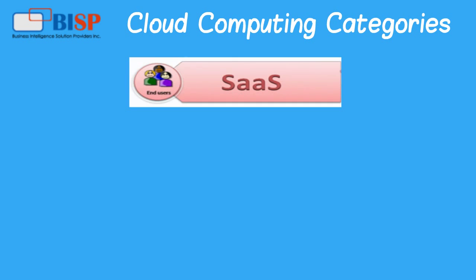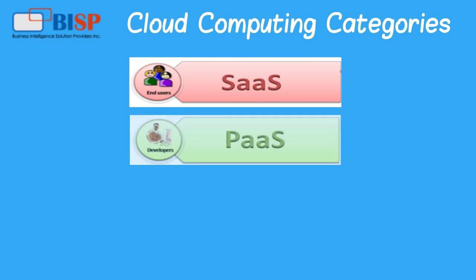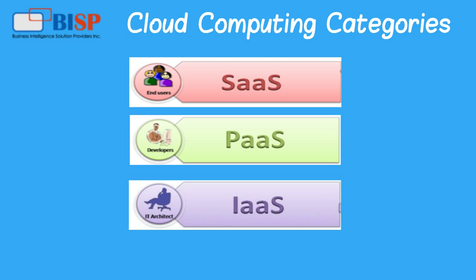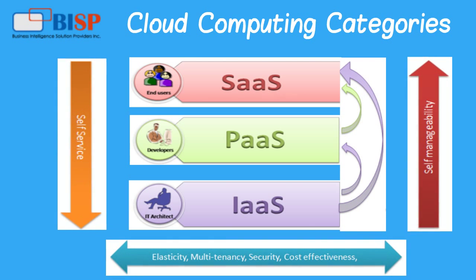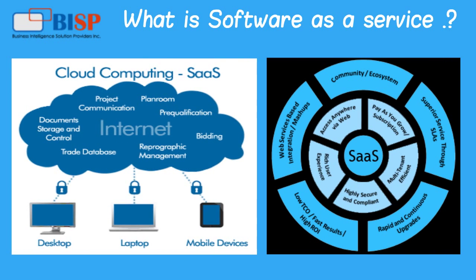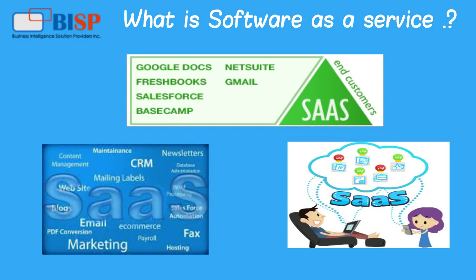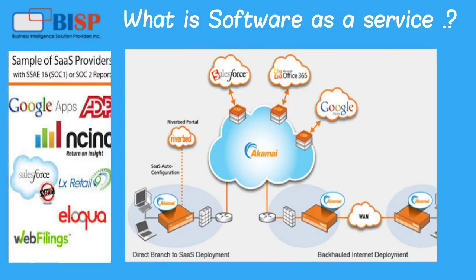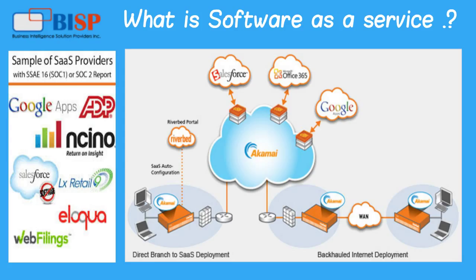Software as a Service. What is Software as a Service? Software as a Service is a way of delivering applications over the internet as a service. Instead of installing and maintaining software, you simply access it via the internet, freeing yourself from complex software and hardware management. Examples include Google and Salesforce.com.